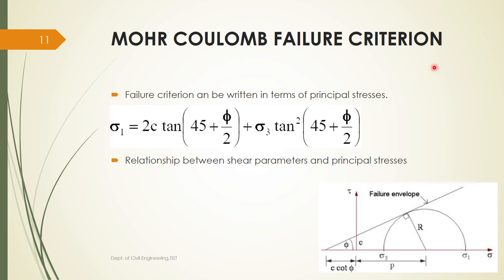The failure criteria can also be explained analytically using equations. The failure criterion can be written in terms of principal stresses σ1 and σ3 and shear parameters c and φ. This gives the relationship between shear parameters and principal stresses. So problems can be solved either using the graphical method by drawing Mohr circles, or using the analytical equation involving principal stresses.